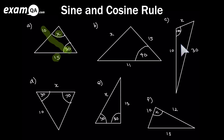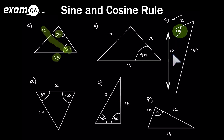For triangle C: again, only one angle is involved, so we're thinking cosine rule. However, we don't have both adjacent sides to the angle known — one is 10, but the other is x and unknown. So this doesn't fit scenario one of the cosine rule. It also doesn't fit scenario two, which requires all three sides known. So we cannot use the cosine rule as given. We'll come back to it, as an extra step first allows us to then work out side x.